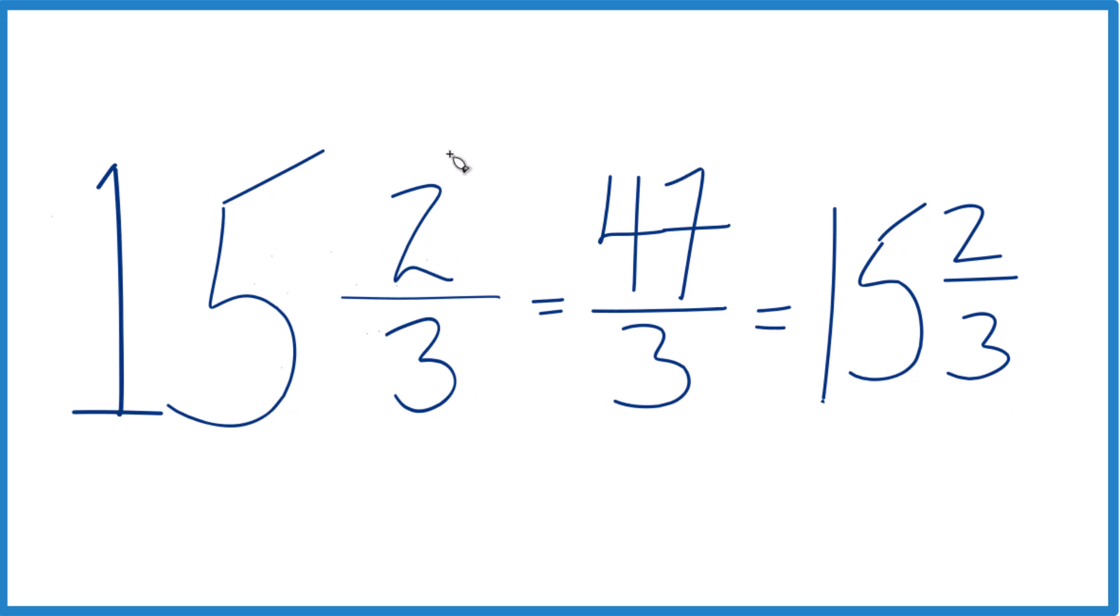That's the same mixed number that we started out with. And these are equivalent, 15 and two-thirds, it's equal to, has the same value as 47-thirds. It's just that we've written this as an improper fraction, and here 15 and two-thirds, that's our mixed number.